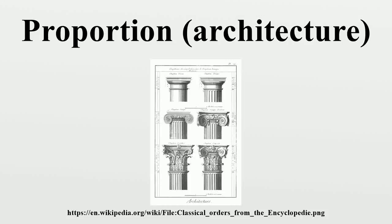Proportion is a central principle of architectural theory and an important connection between mathematics and art. It is the visual effect of the relationships of the various objects and spaces that make up a structure to one another and to the whole. These relationships are often governed by multiples of a standard unit of length known as a module.